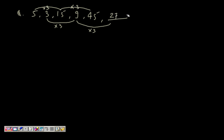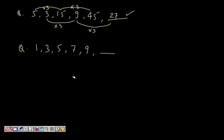Now we have another problem on a similar line. Let's find out something on 1, 3, 5, 7, 9 — what is the next? This is very easy. There is a pattern: we just keep on adding 2. 1 plus 2 gives you 3, plus 2 gives you 5, plus 2 gives you 7, plus 2 gives you 9. So we are just adding 2, and this will be 11, which is the right answer.